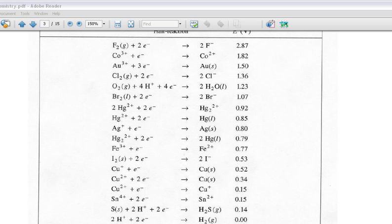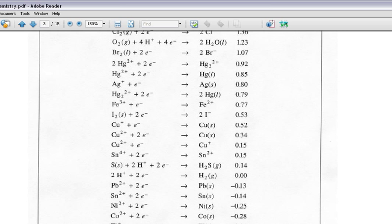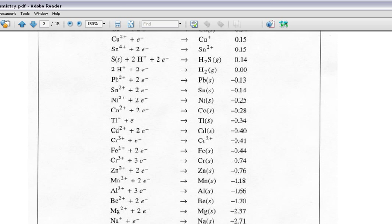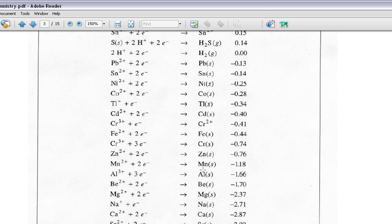So we pull up our table. We look around for zinc. Ah, there it is. Zinc. Oh, no. This is backwards, right? We're going from zinc to zinc 2+. So, actually, since zinc is being oxidized, we're going to take the opposite of this number.